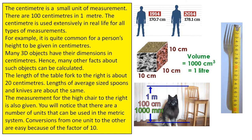The length of the table fork to the right is about 20 centimeters. Lengths of average size spoons and knives are about the same. The measurement for the high chair to the right is also given.